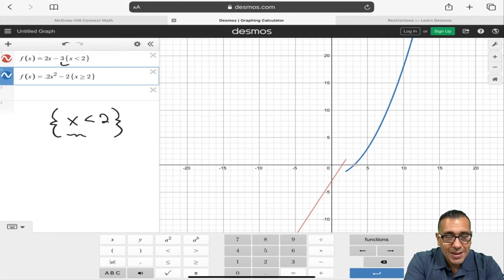And you're telling it, in this case, I want you to graph it when x is less than 2. And in this one down here, we're graphing that half of the function when x is greater than or equal to 2.